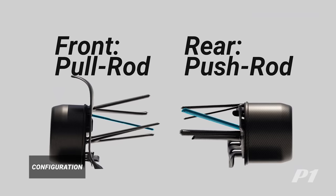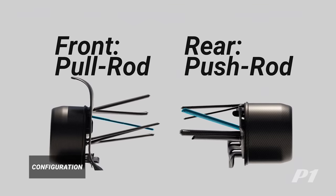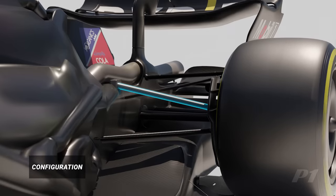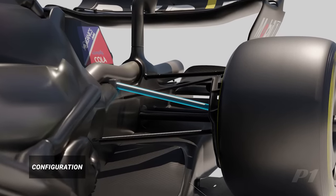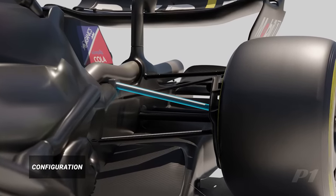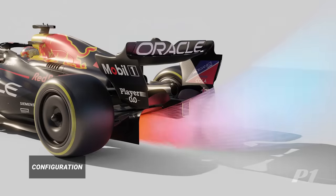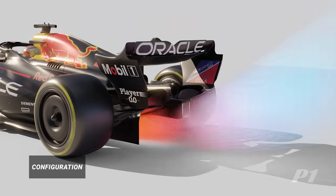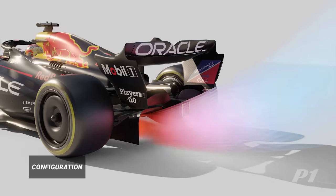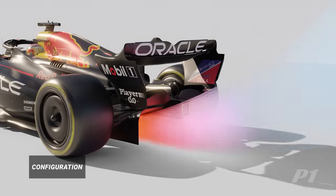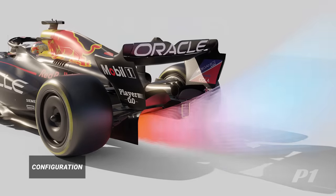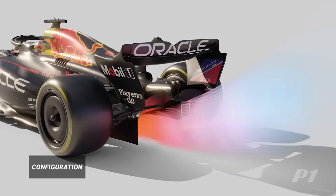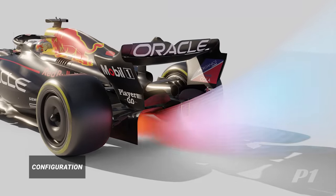As mentioned before, pushrods are mounted higher in the chassis, which in the case of rear suspension means that the dampers and torsion bars can be mounted above the gearbox casing. This frees up space underneath and gives more freedom when designing the floor and diffuser. The extra room is handy with ground effect cars that rely heavily on the underside to generate downforce.